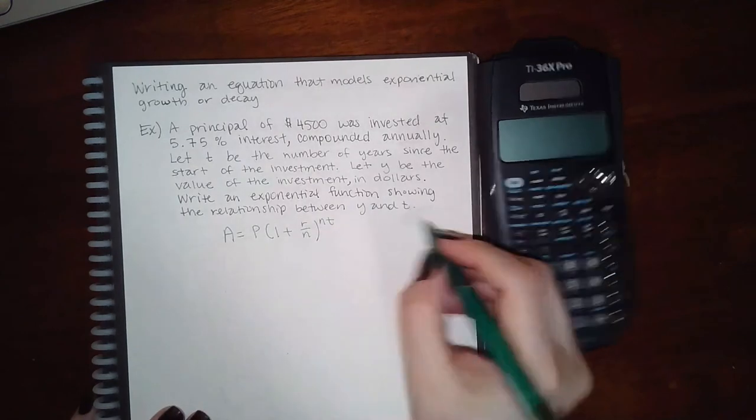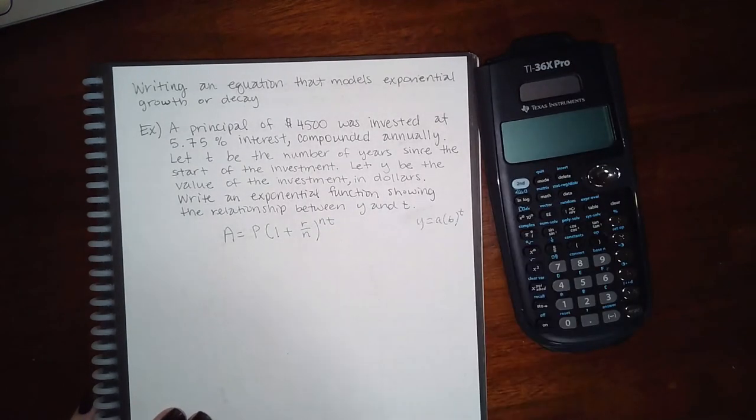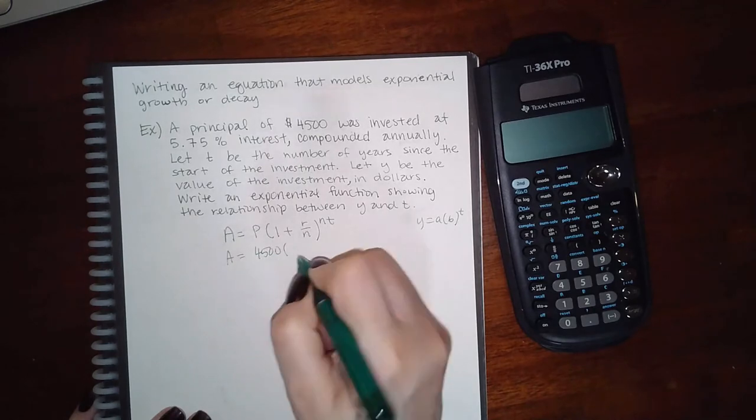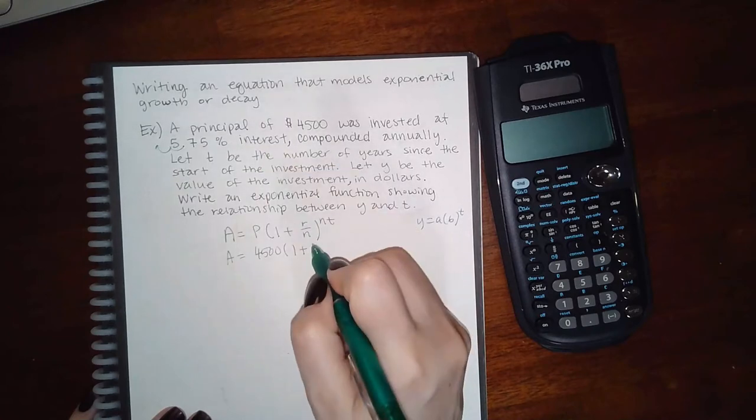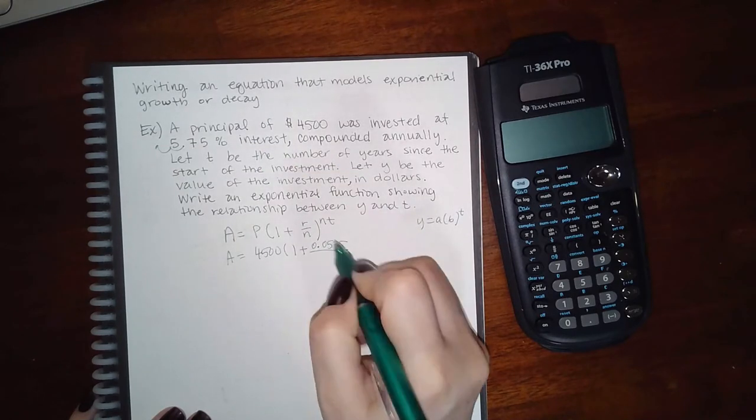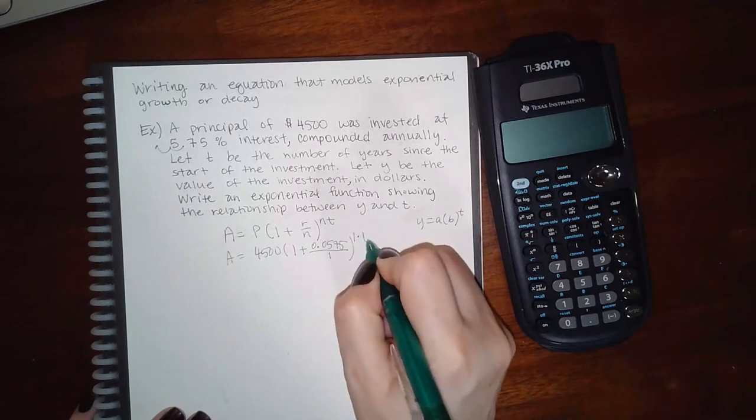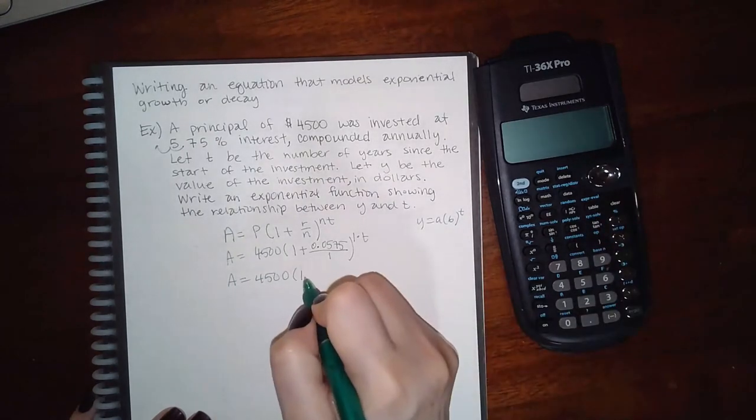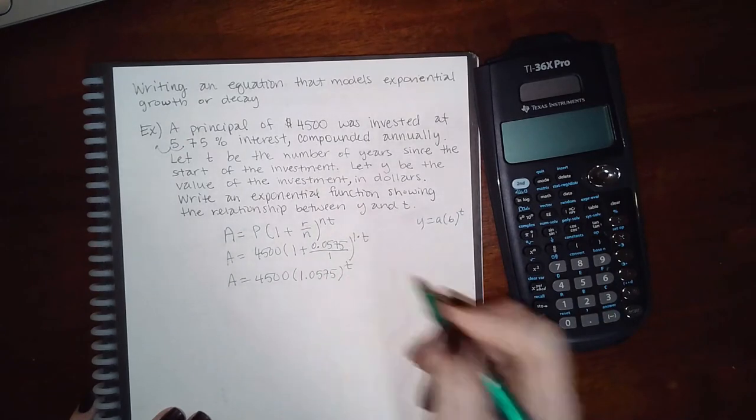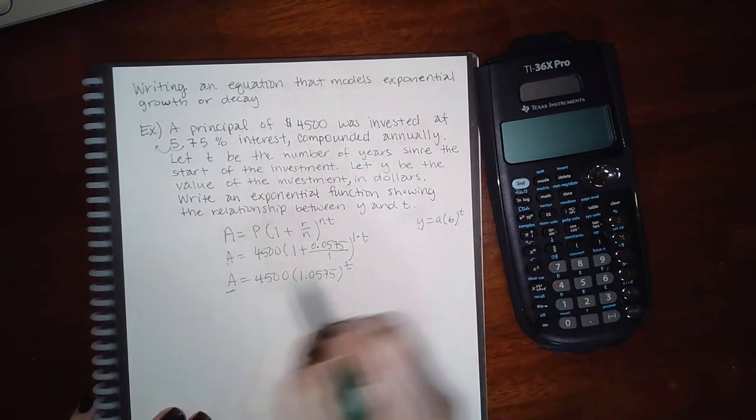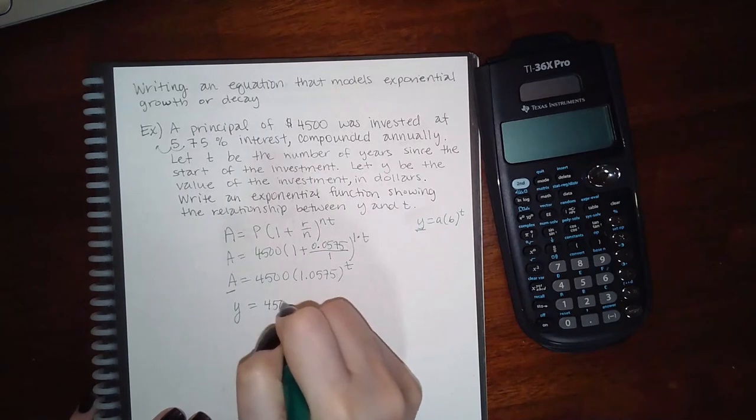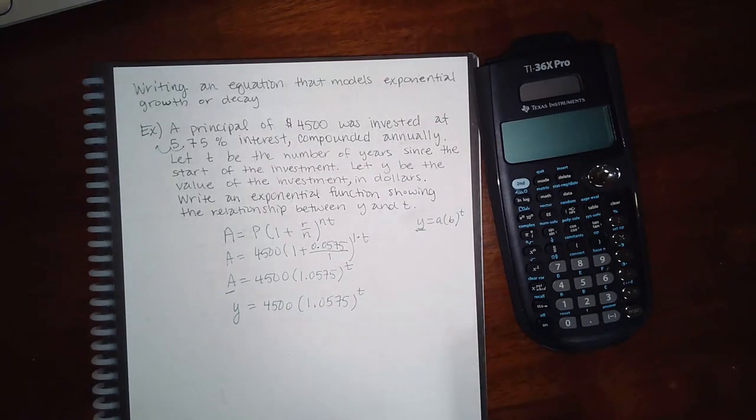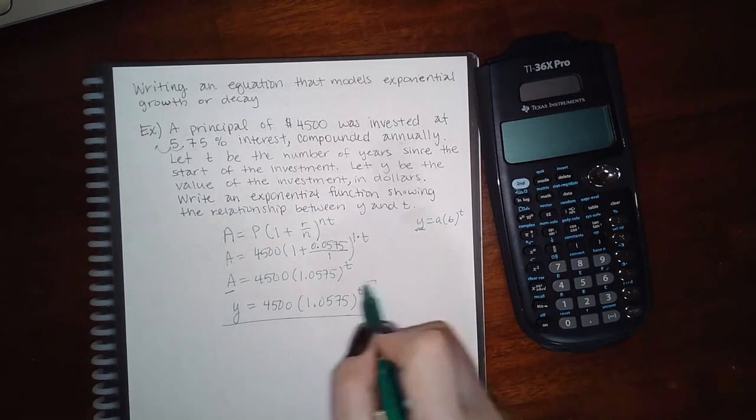But then we're going to make it look like this at the end. Let's see: A is what I don't know. I do know my investment was $4,500. I do know that my rate is 0.0575. Compounded annually means n is 1, and then 1 times t. And then you're going to end up with 4500(1.0575)^t. The only thing left to do is instead of capital A here, they want you to write y. And that's it. This is the equation that they wanted you to find.